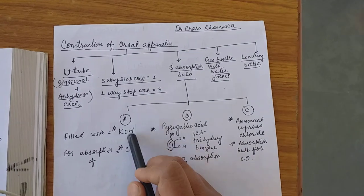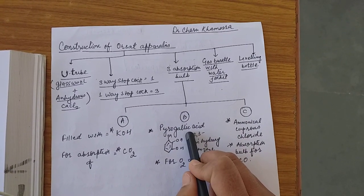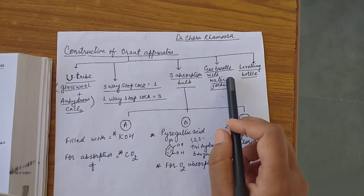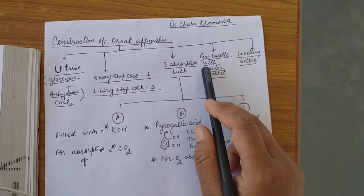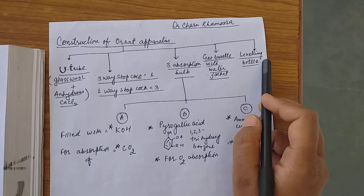There are three absorption bulbs here. These absorption bulbs containing: first of all containing KOH, another bulb containing pyrogallic acid, and third bulb containing ammoniacal cuprous chloride. After that there is a gas burette which is surrounded by air jacket and last there is a leveling bottle.